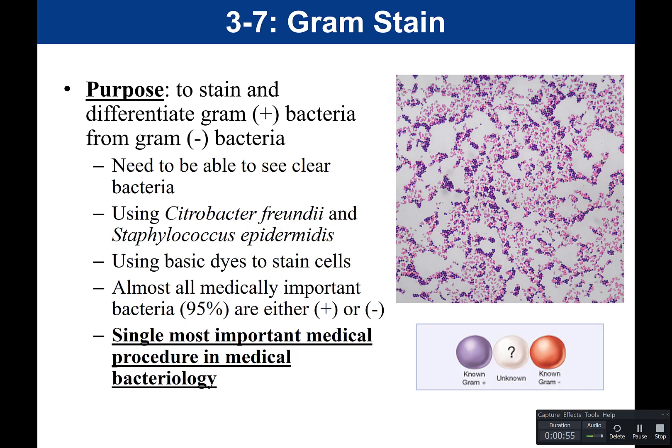In a differential stain, you're differentiating between bacteria. A capsule stain would also be a differential stain — it allows us to differentiate between bacteria that produce capsules and those that don't. Endospore stain and acid-fast stain are also differential stains. They allow us to differentiate bacteria that produce an endospore, or those with an acid-fast positive cell wall containing 60% mycolic acid, versus those that don't.